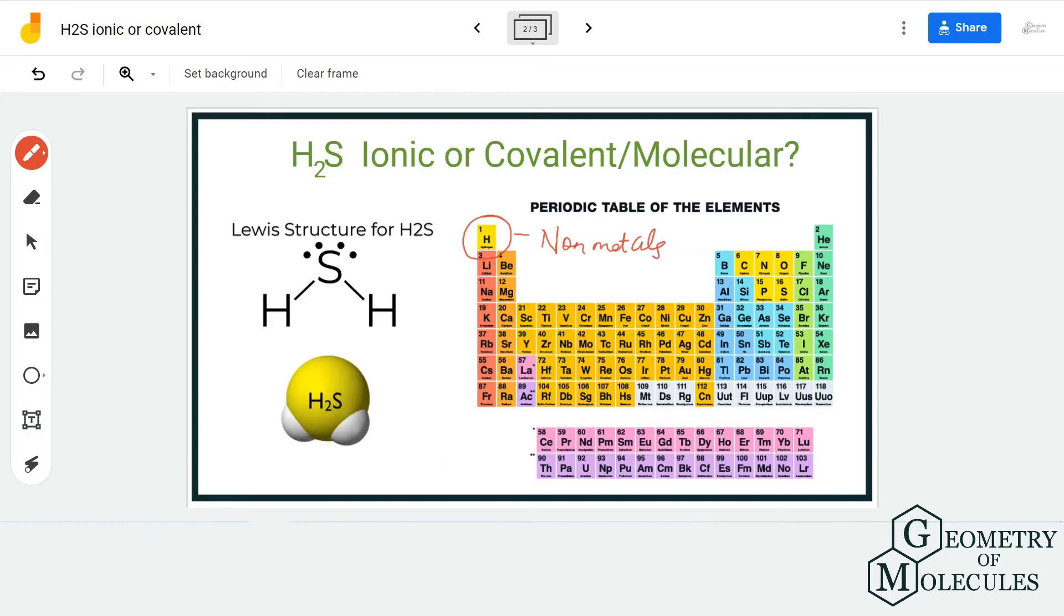it is also a non-metal. So as both these atoms are non-metals, the bond formed between sulfur and hydrogen is a covalent bond, which makes this compound a covalent compound. It is also known as a molecular compound. So H2S,